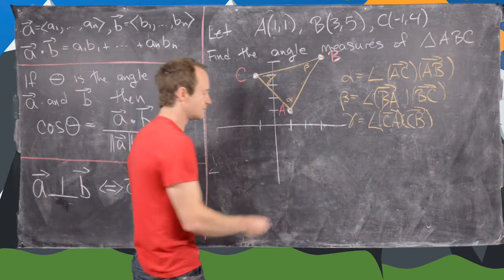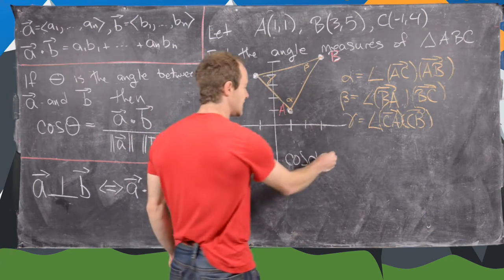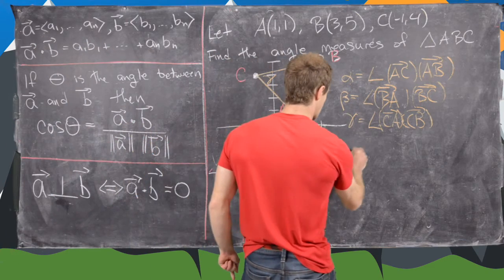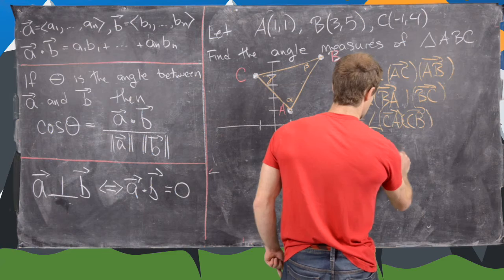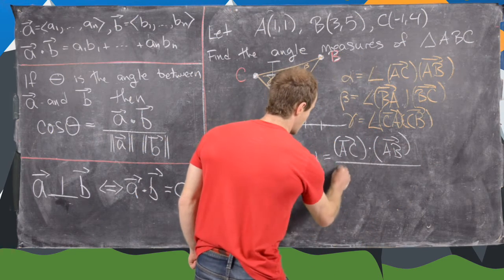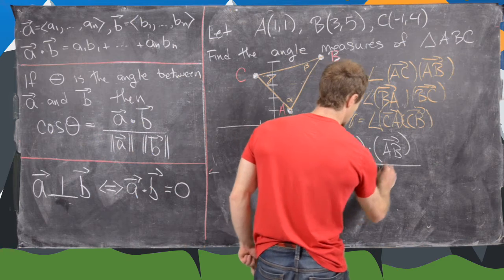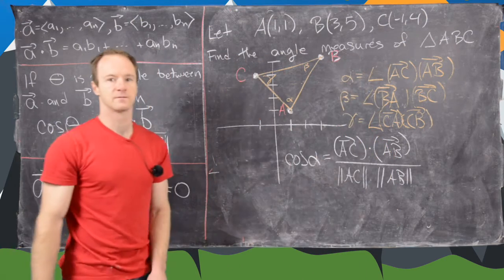So let's see what we get. So notice we have cosine of alpha is going to be equal to vector AC dot vector AB over the length of AC times the length of AB.